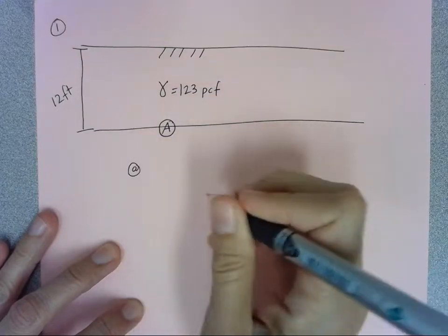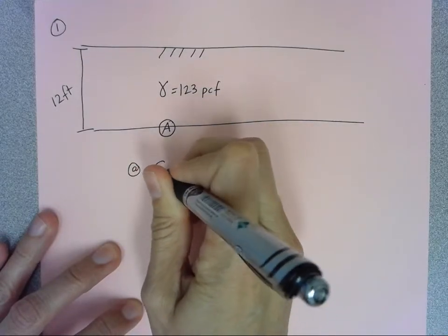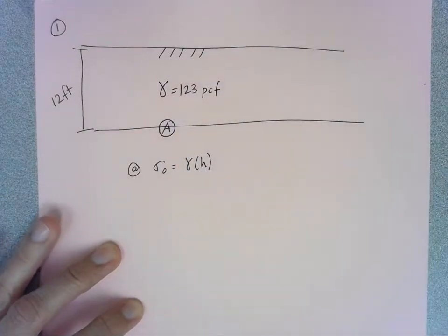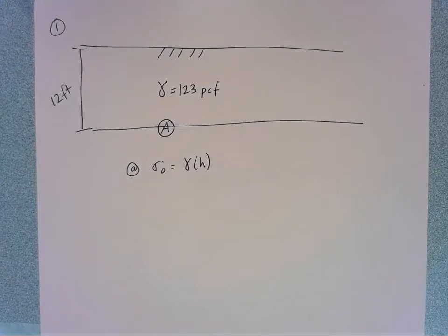So all we have to do to find that effective stress is multiply our unit weight times our height because we don't have any water we have to deal with here.